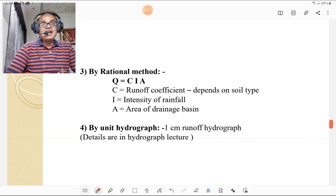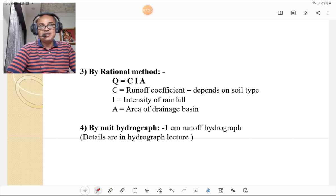Then third method is by rational method. Rational method is Q equals CIA, where C equals runoff coefficient and it depends on the soil type, I equals intensity of rainfall, and A equals area of drainage basin. Accordingly we can calculate the runoff. In this formula, runoff equals Q.